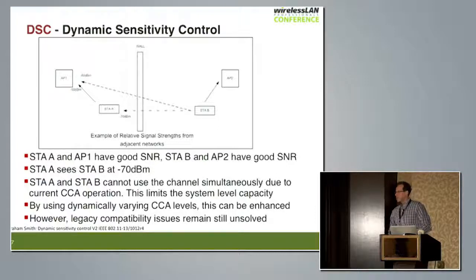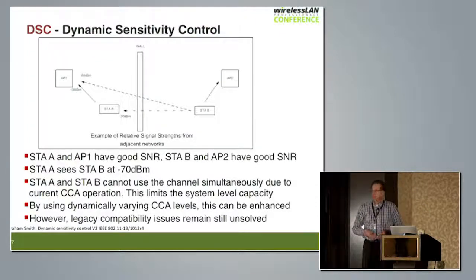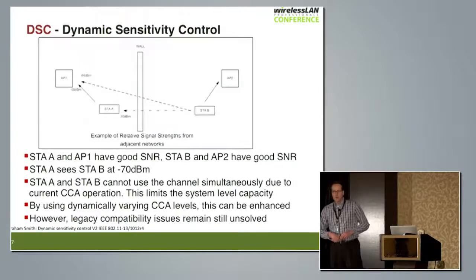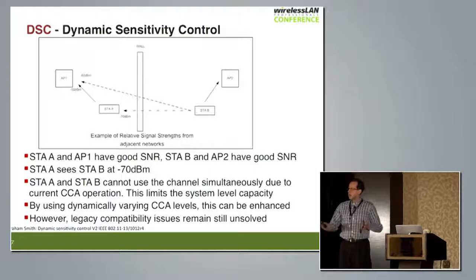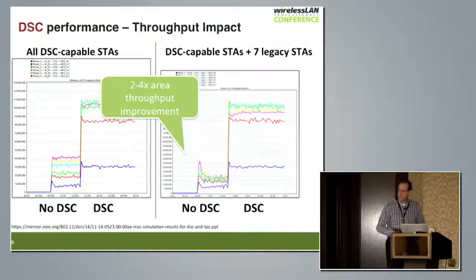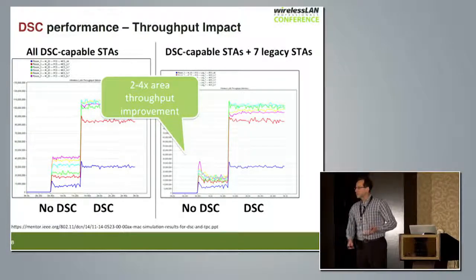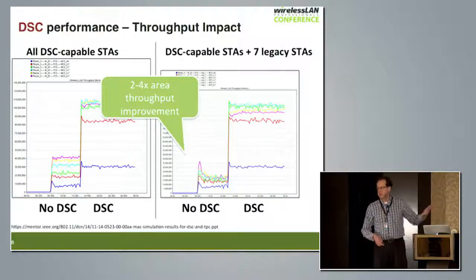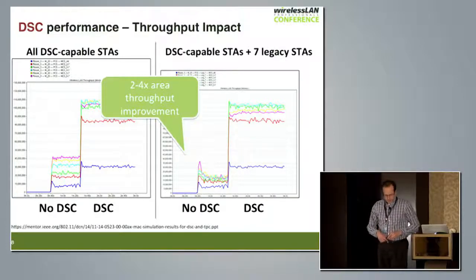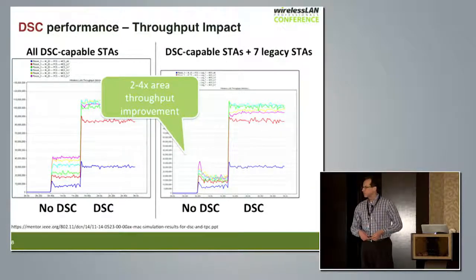Dynamic sensitivity control is the first technology. There has been a lot of discussion about this topic in IEEE meetings, and it's a good promise for improving network capacity. It helps with situations where stations don't get a chance to transmit because of how CCA is currently implemented. Making the CCA assessment dynamic — allowing more clients to transmit at the same time, even at the cost of some simultaneous transmission interference — seems to improve overall network performance. Simulation results show good potential for significant improvements, though the negative impact on legacy clients is something that still needs to be understood in more detail.